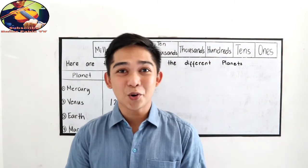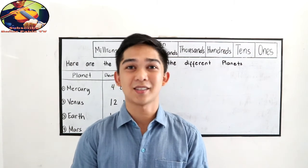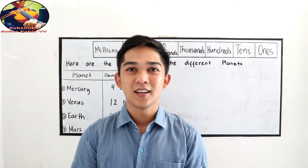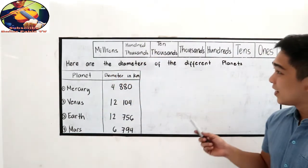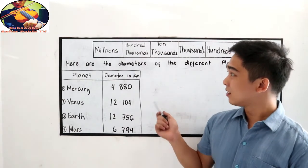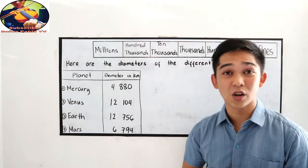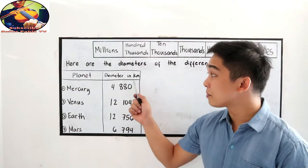In this topic, we're going to learn how to write and read numbers. Here, we have the different diameters of planets in our solar system in terms of kilometers.